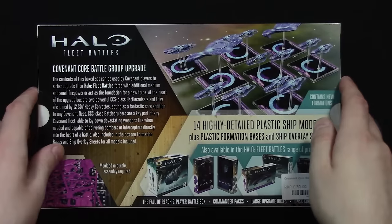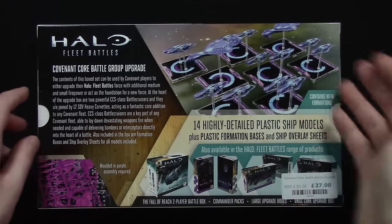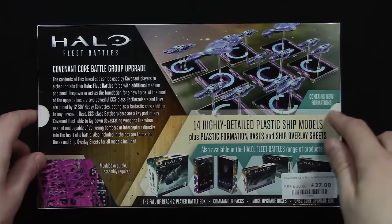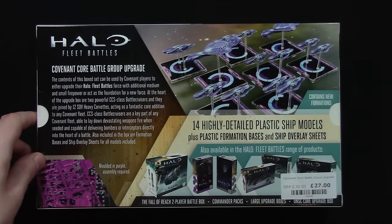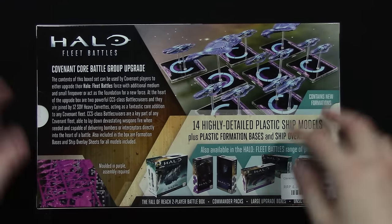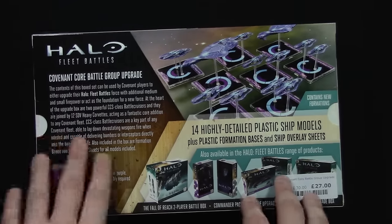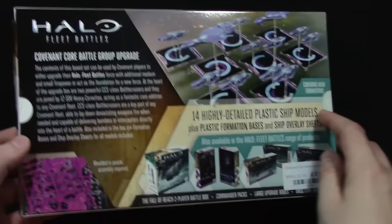And on the back, just more stuff, more photos of what you get. It contains new formations, which is cool. More stuff in the Halo product range. And it also tells you that this is molded in purple and assembly required. And also some fluff about what the ships inside are all about.